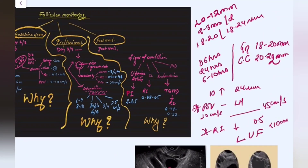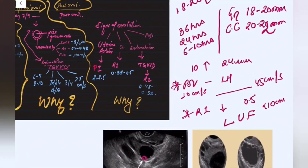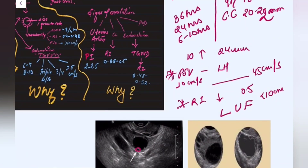We also look at the endometrium: higher vascularity in the endometrial zones means better morphology — the triple line pattern — and better chances of implantation and pregnancy. After ovulation, the dominant follicle ruptures and forms a thick-walled, crenated corpus luteal cyst along with some free fluid in the pouch of Douglas, with very high perifollicular vascularity around the corpus luteal cyst.